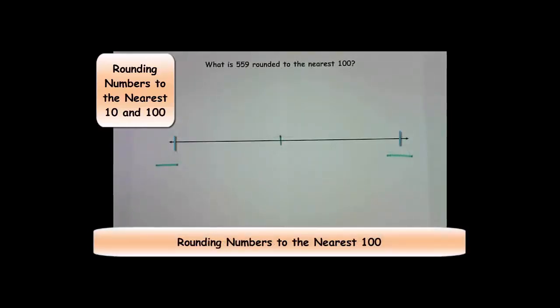Here we have what is 559 rounded to the nearest 100. Again, the first thing that students are going to do is to find the two benchmark numbers that 559 comes in between. Since we are rounding to the nearest 100, I know that the 100s that 559 comes in between is 500 and 600. Then I need to find the midpoint. And I know that the midpoint is the number that comes right in the center of 500 and 600. And that number is 550.